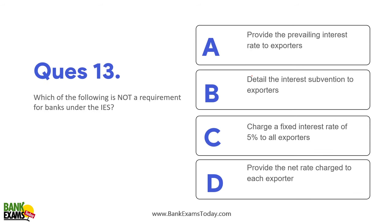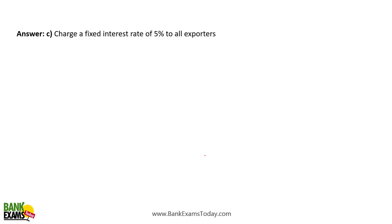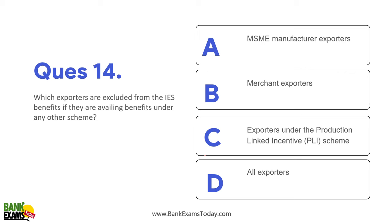Which of the following is NOT a requirement for banks under IES? Charging a fixed rate of interest of 5% is not a requirement at all — banks provide the prevailing interest rate to exporters, and then the IES subvention is applied. Which exporters are excluded from IES benefit? Exporters who are already availing benefits under the Production Linked Incentive (PLI) scheme cannot take benefit under the Interest Equalization Scheme.